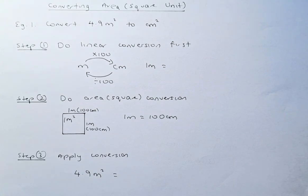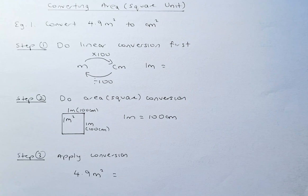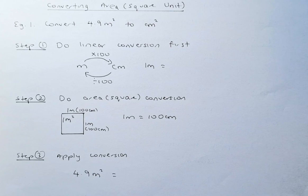In this video, we are going to learn how to convert area or square units. For example, we are going to convert 4.9 meter squared to centimeter squared.